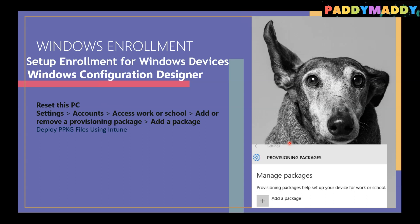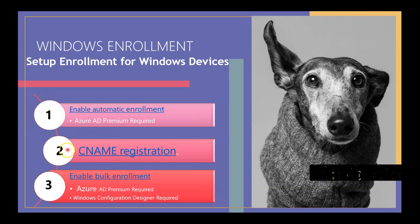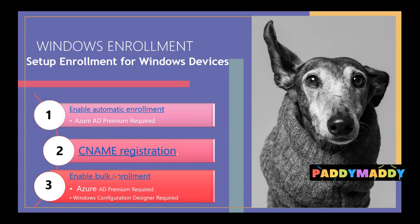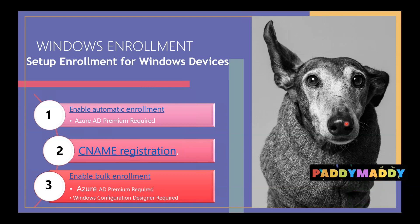Since this is a bigger topic, I'll cover it in another dedicated video. So those are your three different enrollment options. Most organizations will use the first option (automatic enrollment). Budget-conscious companies will use the CNAME registration option. All of these options support both bring-your-own-device (personally owned) and company-owned device concepts. Check out the other lectures in the description for more details. Thank you for watching - see you in the next lecture.